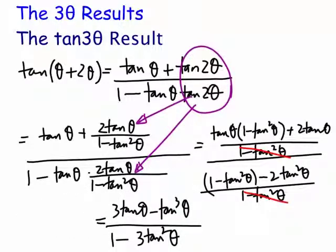This is the tan(3θ) result: tan(3θ) = (3tan(θ) − tan³(θ)) / (1 − 3tan²(θ)). This has been a quick overview of the 3-theta results. Thank you for watching. Bye for now.